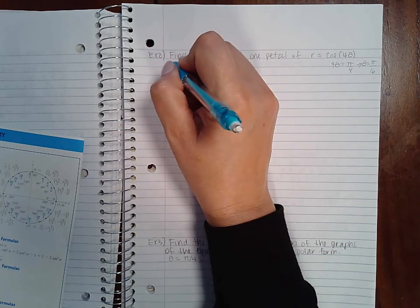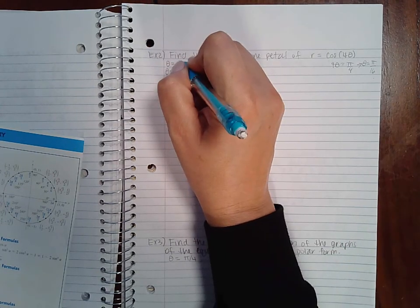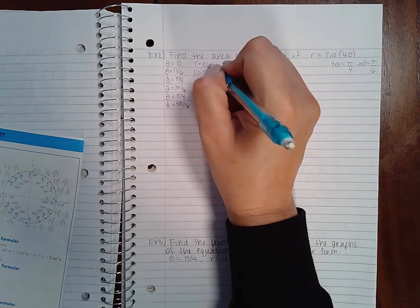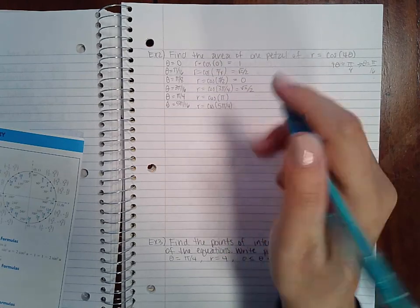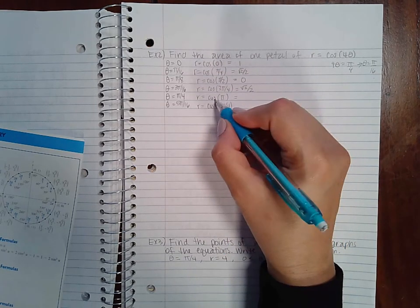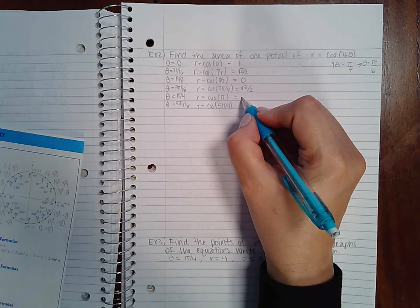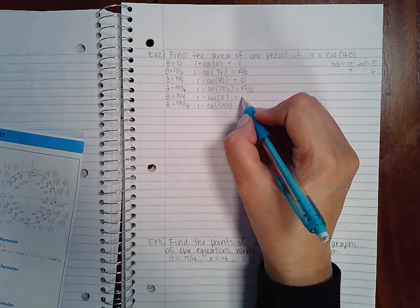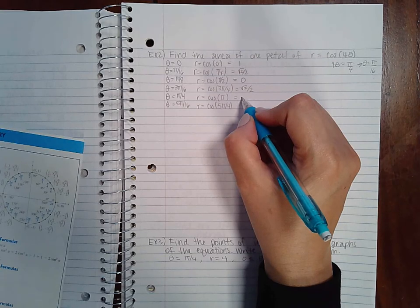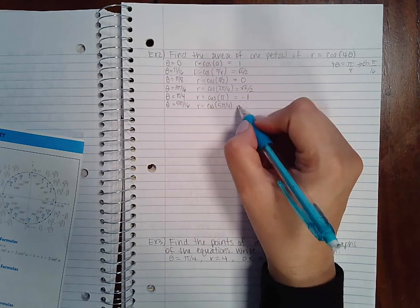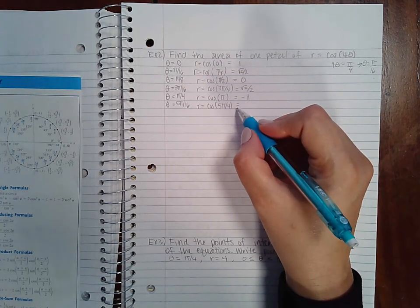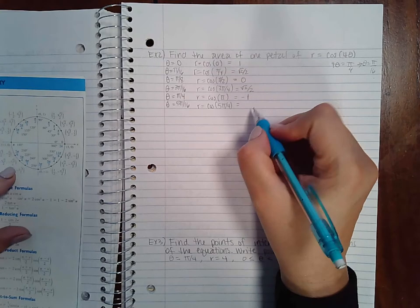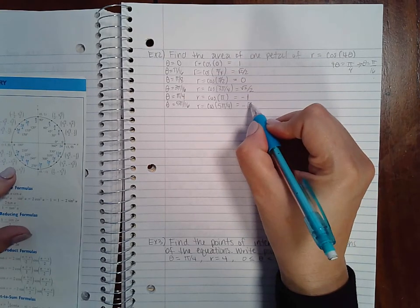Oh, I have to start with 0 actually, I forgot that. So this is actually 1. So I haven't finished, I haven't gotten all the way around yet. Cosine of pi is negative 1. And then I've got to keep going until I get all the way around, so cosine of 5 pi over 4 is negative square root of 2 over 2.